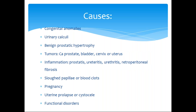There are plenty of causes. All the causes should be divided into congenital, inflammatory, inherited, and acquired. Congenital anomalies, urinary calculi as we discussed earlier, benign prostatic hypertrophy, tumors — carcinoma of prostate, bladder, cervix or uterus. Inflammations including prostatitis, ureteritis, urethritis. Retroperitoneal fibrosis, sloughed papillae or blood clots. Pregnancy, uterine prolapse or cystocele. And functional disorders.